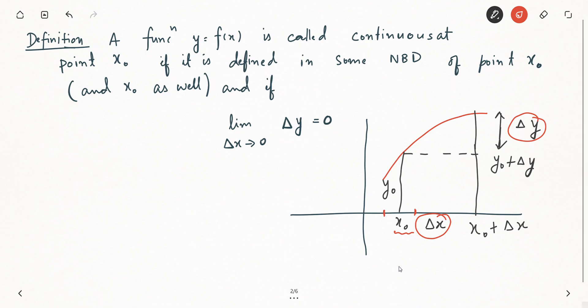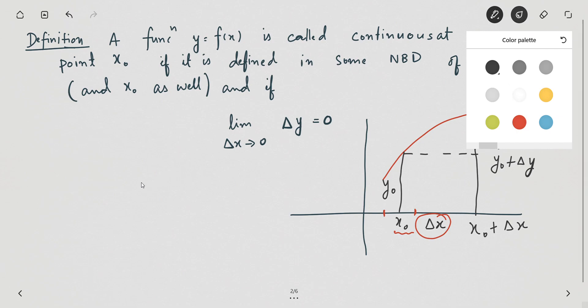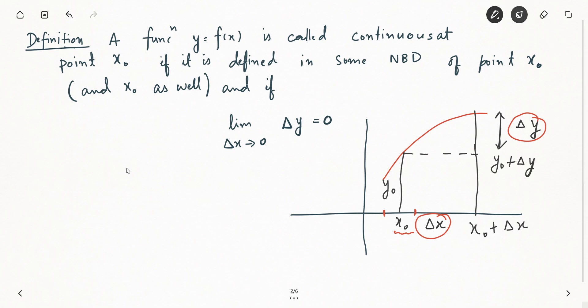Now let us work out more inferences from this definition. Consider limit as x tends to π/2 of sin(x). Generally, how do we evaluate this? If you have studied, you might know: is it sufficient to simply put x = π/2 in place of x in the expression sin(x) to get the limit?